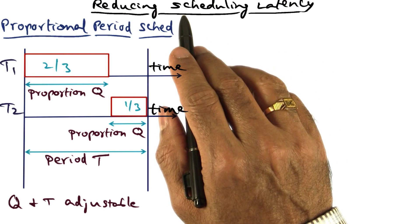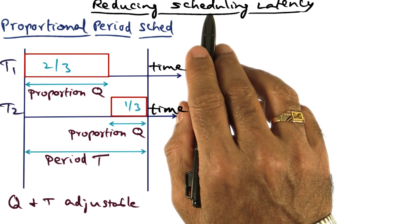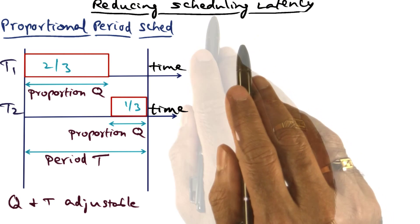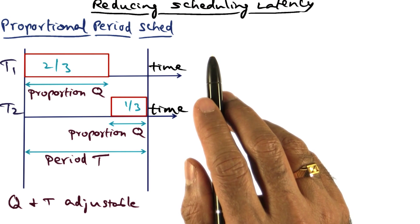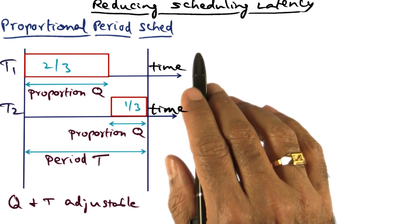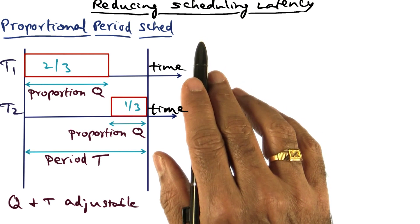The third source of timer latency I mentioned is the scheduling latency. That is, the timer event goes off, and we want to schedule the app that is going to deal with the timer event as quickly as possible, but the scheduler is in the way. How do we quickly make sure that that app gets scheduled?